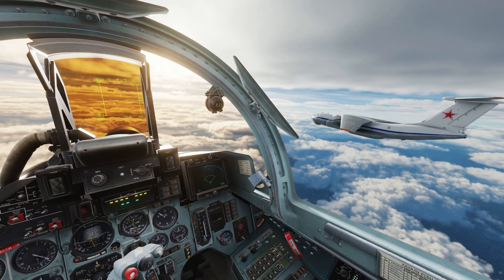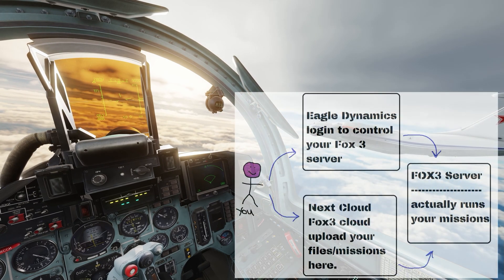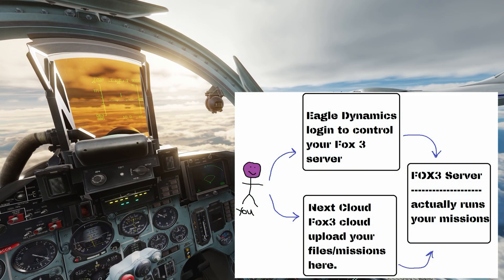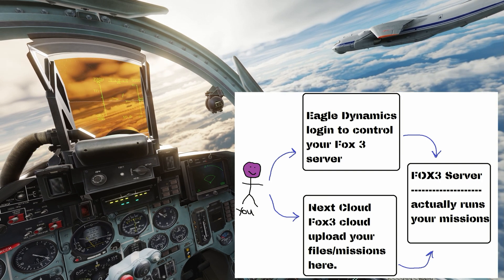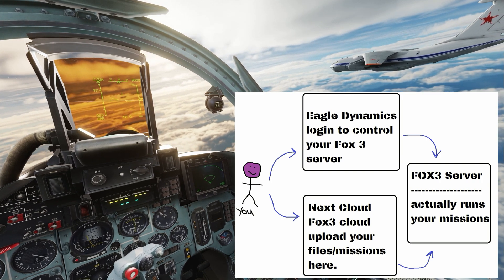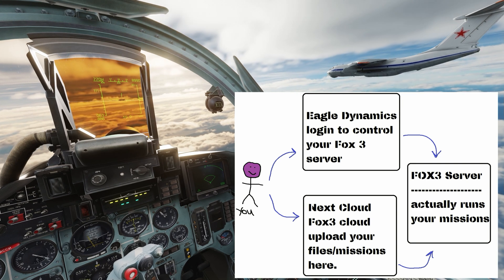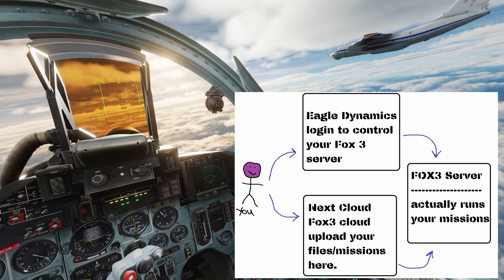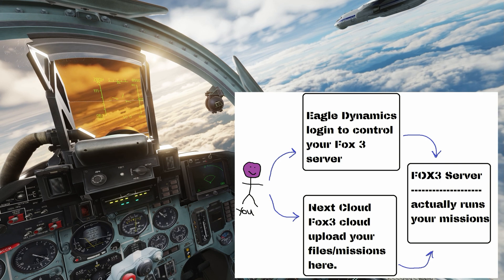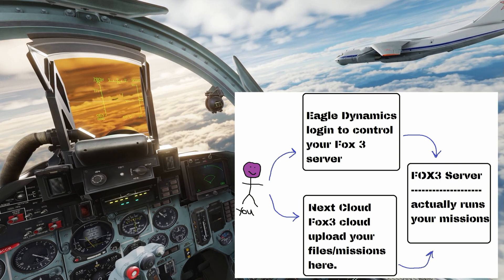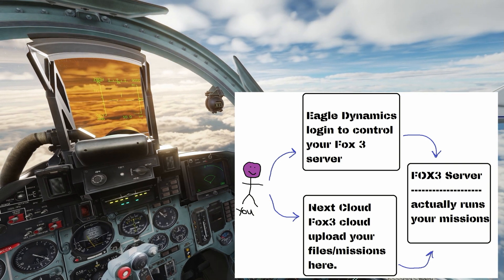Once you receive the instructions and follow the steps, the important thing to keep in mind is that the Fox3 server is running in a data center somewhere around the world. To control it you need to log into Eagle Dynamics with the username and password provided to you and look under Profile and then My Servers.